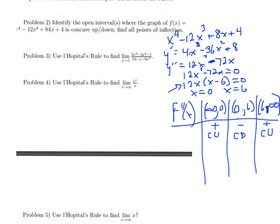So the function goes from concave up to concave down and back to concave up again. All points of inflection are identified, and the function is concave up on (−∞, 0) and (6, ∞), and concave down on (0, 6).